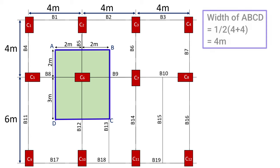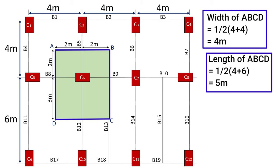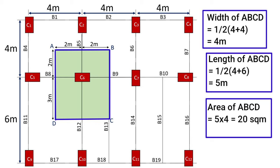The width of area ABCD equals half the length of B8 plus half of B9, totaling 4 meters. The length equals half the length of B5 plus half of B12, totaling 5 meters. Hence, the area of ABCD is 20 m².